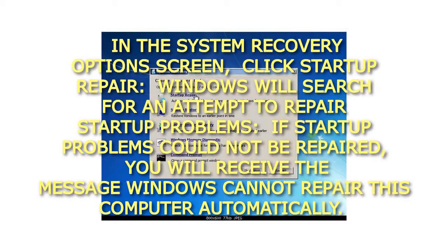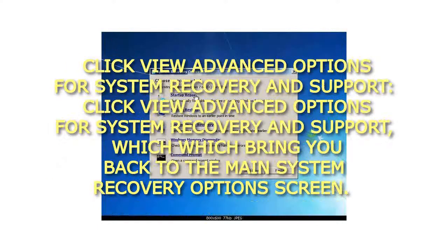In the System Recovery Options screen, click Startup Repair. Windows will search for and attempt to repair startup problems. If startup problems could not be repaired, you will receive the message: 'Windows cannot repair this computer automatically.' Click 'View Advanced Options for System Recovery and Support,' which will bring you back to the main System Recovery Options screen.